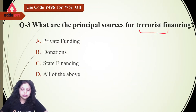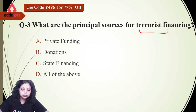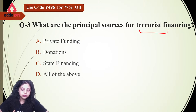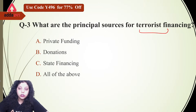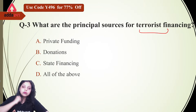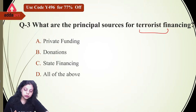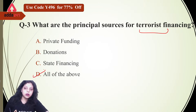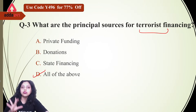What are the principal sources for terrorist financing? The options are: private funding, donations, estate financing, or all of the above. All of the above is correct because all are principal sources for terrorist financing. Whether it is private funding, donations, or estate financing, all are sources of terrorist financing. The right answer is D.